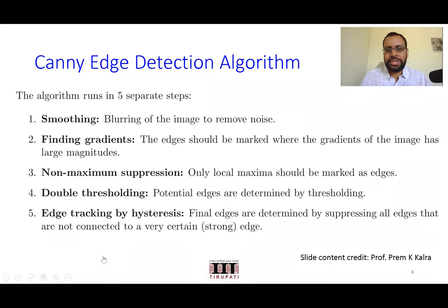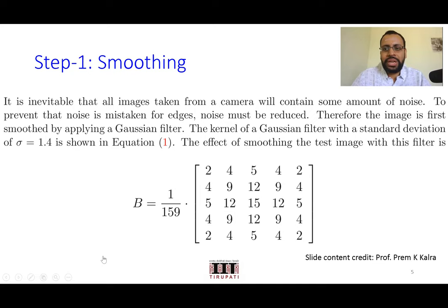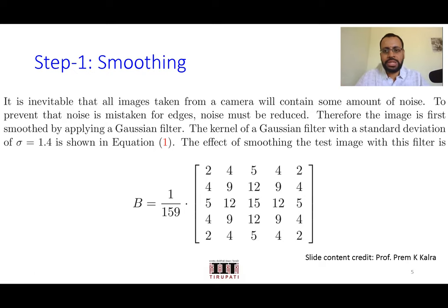Like any other algorithm, the moment you want to compute edges, the initial step is to apply Gaussian smoothing to get rid of noise. This is a 5×5 Gaussian kernel with sigma equal to 1.4. The central pixel has value 15, the immediate neighbors 12, diagonals 9, next diagonals 5, and the farthest corners 2. This is the first step of the Canny edge detector.